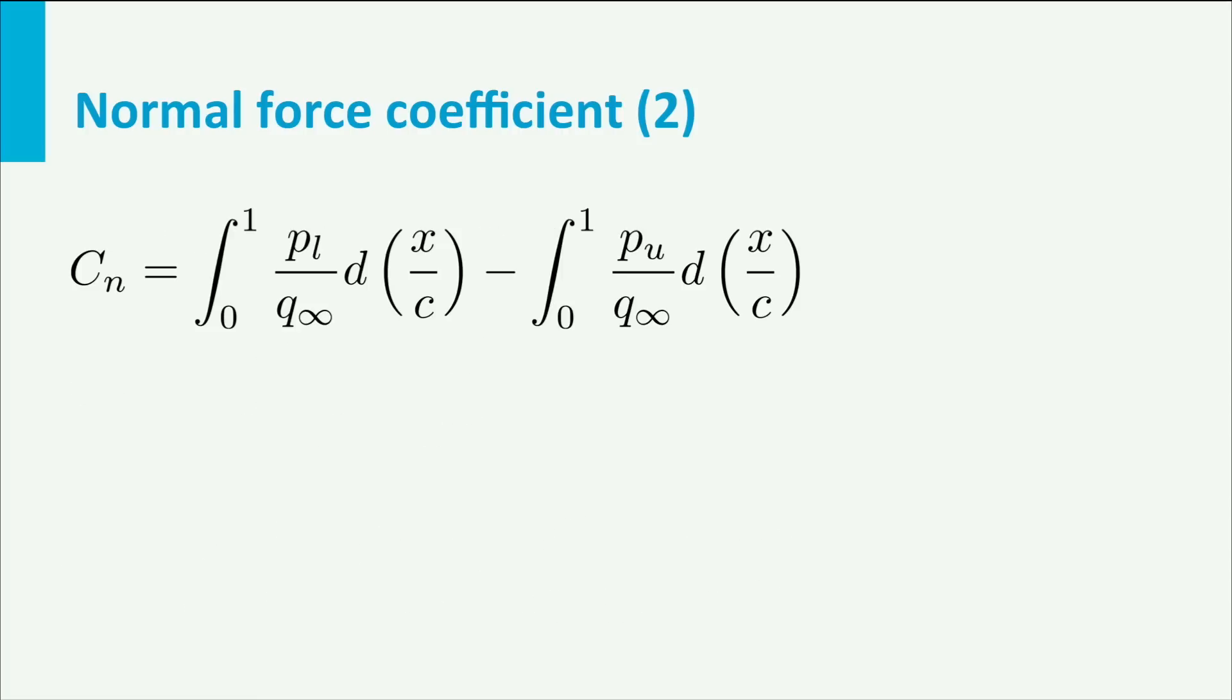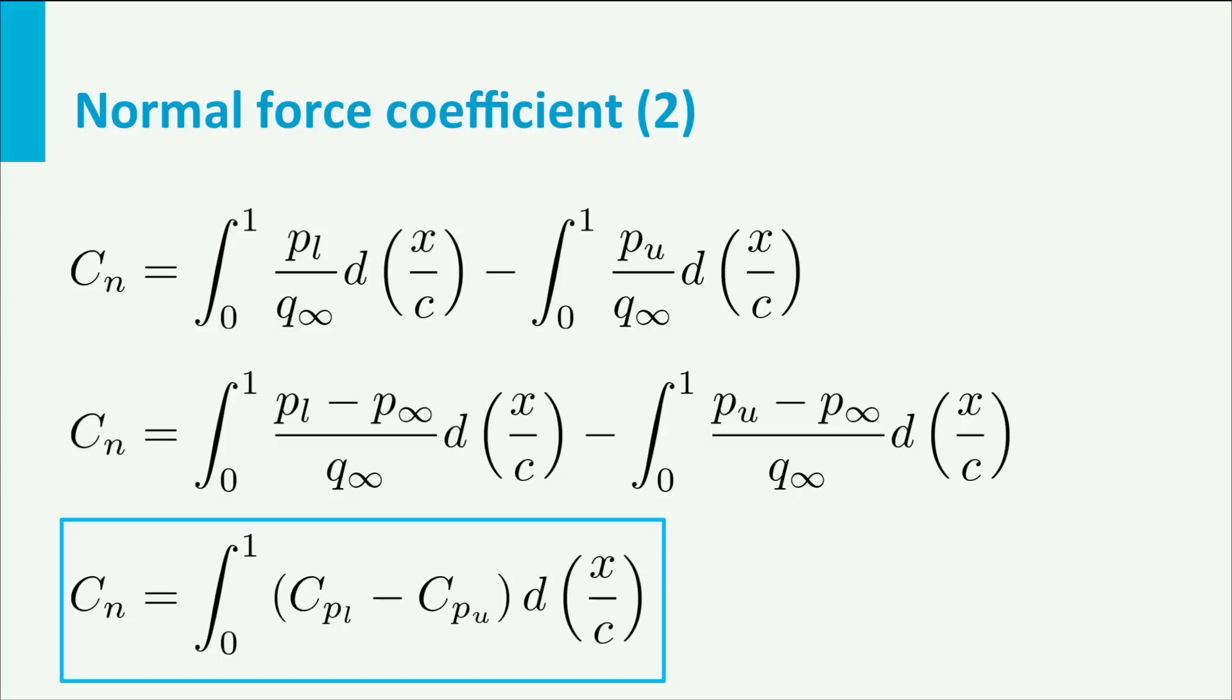Now watch the next trick. From both integrals we subtract p infinity divided by q infinity. That is allowed, since nothing changes. But what we have found now is that, with p l minus p infinity divided by q infinity being cp lower and the other being cp upper, the normal force coefficient on an airfoil is the integral of the area between the upper and lower pressure coefficient distributions.